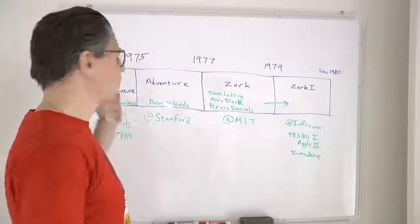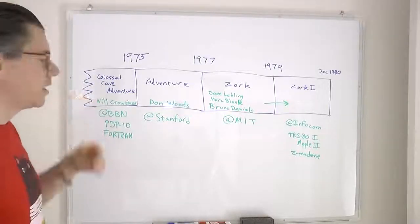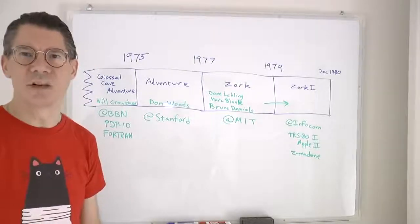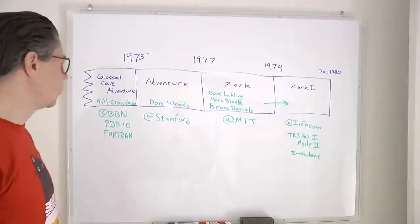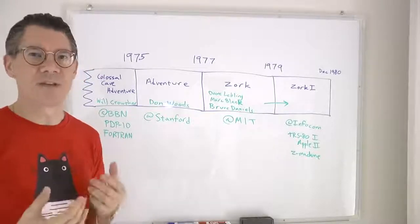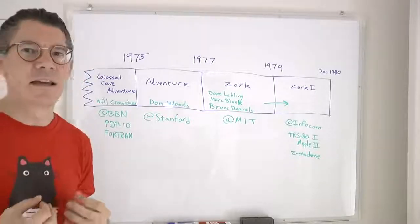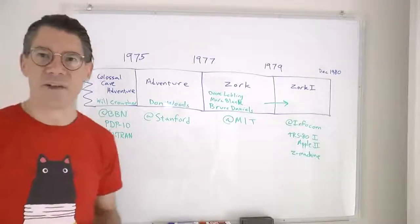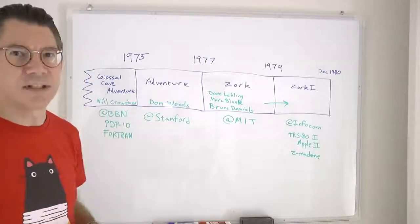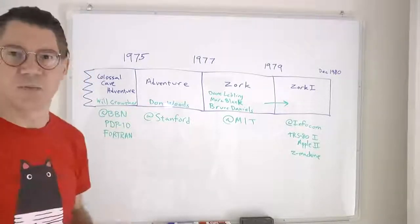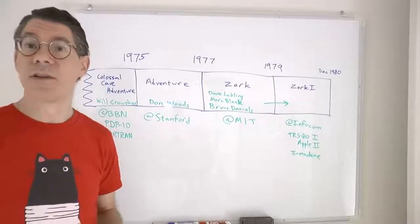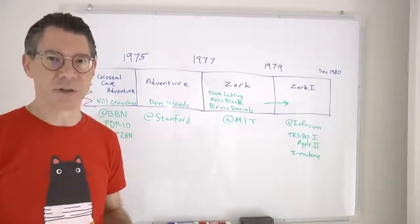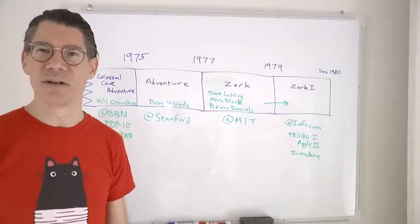The history started in the 70s with a guy named Will Crowther. He was an avid caver and would often go to Mammoth Cave in Kentucky. He wanted to create a computer program that could recreate the experience of going through the caves on a computer. He called it Colossal Cave Adventure, and worked on it throughout the early 70s at BBN — the defense contractor that worked on ARPANET. In fact, Will Crowther worked on some of the early routing protocols for the ARPANET, the predecessor of our beloved internet.